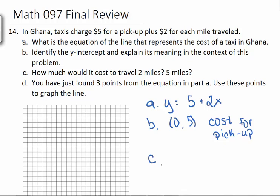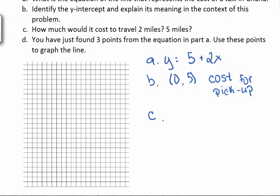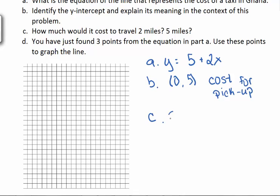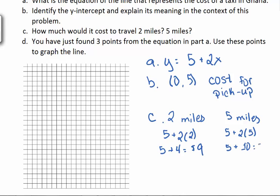So next is part C. How much would it cost to go 2 miles? What about 5 miles? Well, let's start with 2 miles. We know the formula, and so it's just a matter of sticking things in. So for 2 miles, we have 5 plus 2 times 2. 2 times 2 is 4, and 5 plus 4 is 9. What about 5 miles? Well, for 5 miles, we have 5 plus 2 times 5. So it's 10, so a total of 15.